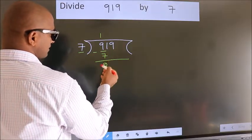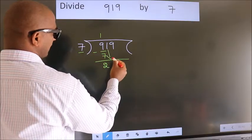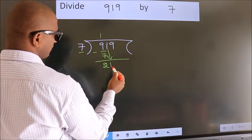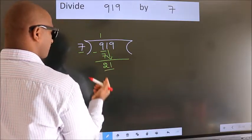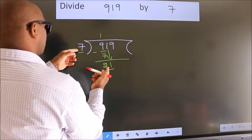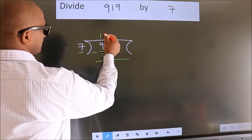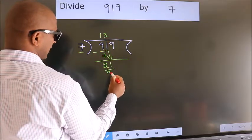After this, bring down the beside number. So 1 down, so 21. When do we get 21 in 7 table? 7 threes, 21.